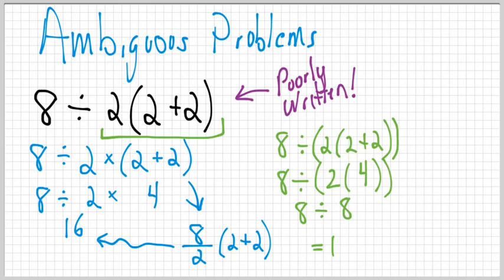One of the reasons that people, I think, do it this way as well, one of the particular reasons that leads people to do this interpretation is because they want to do the distributive property. They want to distribute this two into the brackets, into these parentheses. So this two times that two and times that two.